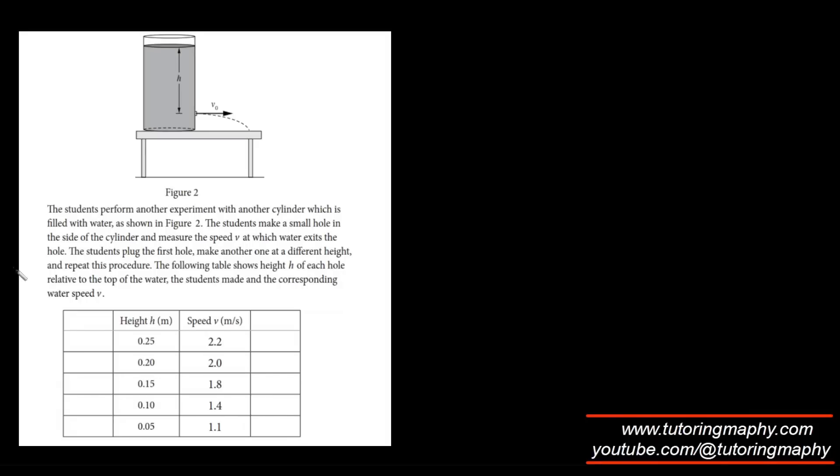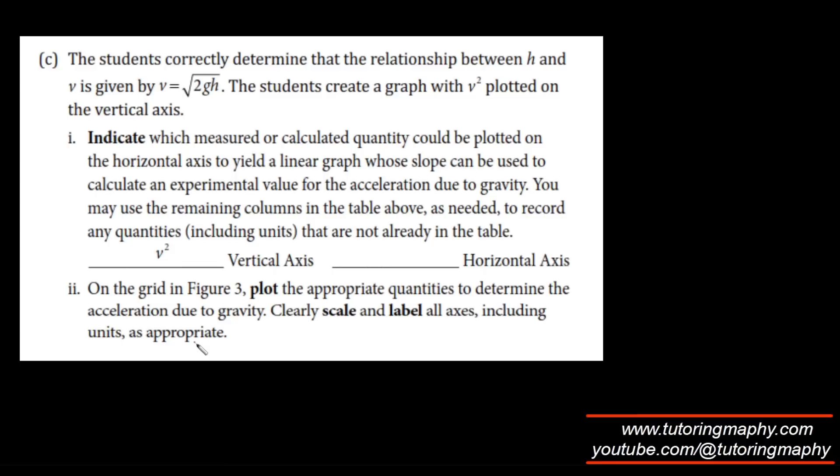Now they are performing another experiment with another cylinder filled with water. The students make a small hole at the side of the cylinder and measure the speed v at which water exits the hole. The students plug the first hole and make another one at a different height and repeat this procedure. The following table shows the height of each hole relative to the top of the water and the corresponding water speed. They now have a relationship based on various heights and the speed of the water.